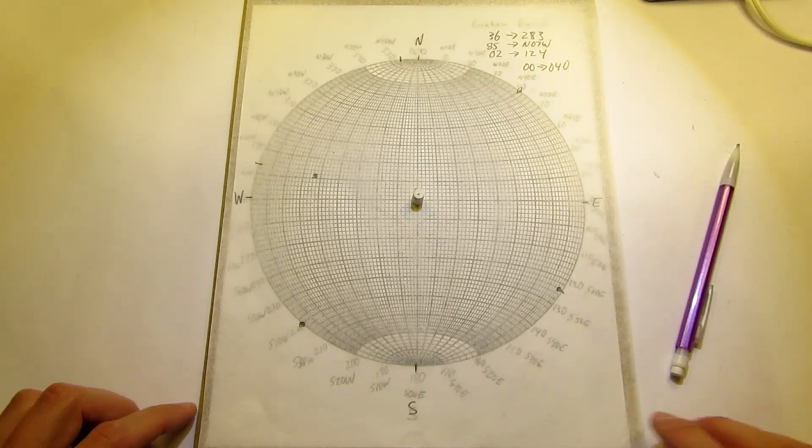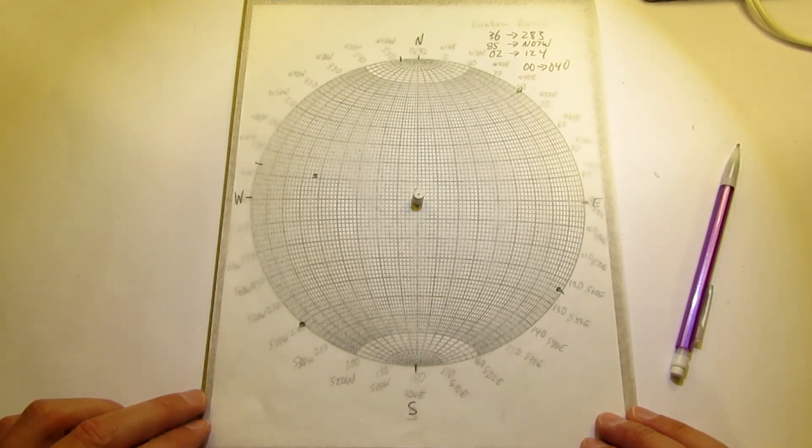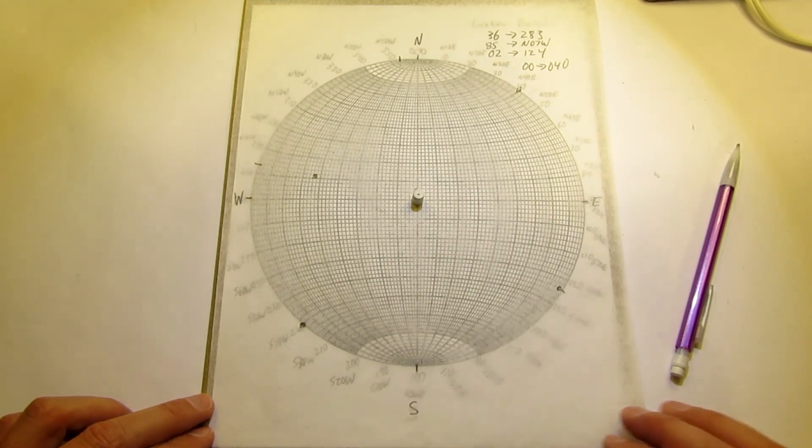So there you go. That's how you plot linear structures with plunge and trend on a stereo net.